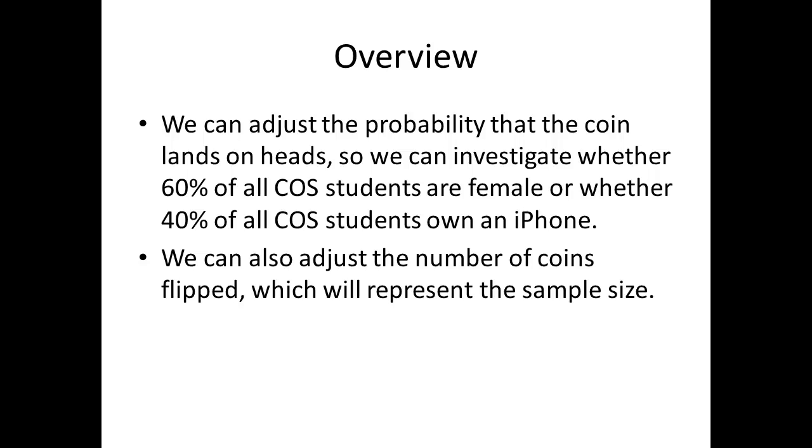We can adjust the probability that the coin lands on heads, so instead of a 50-50 proposition, we can investigate whether, say, 60% of all COS students are female, or whether 40% of all COS students own an iPhone. Basically we'll have a fake coin that can land on heads whatever percentage of the time we want, then we can use that to simulate some real world situations. We're also going to be able to adjust the number of coins flipped, which in our cases will represent the sample size.